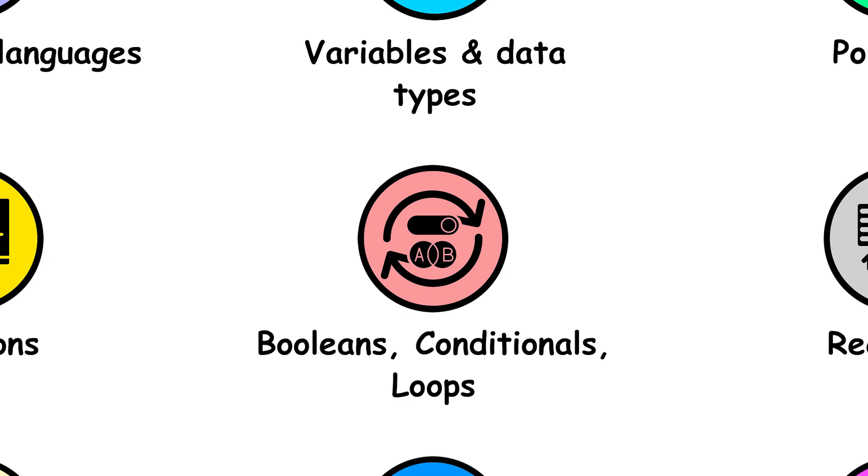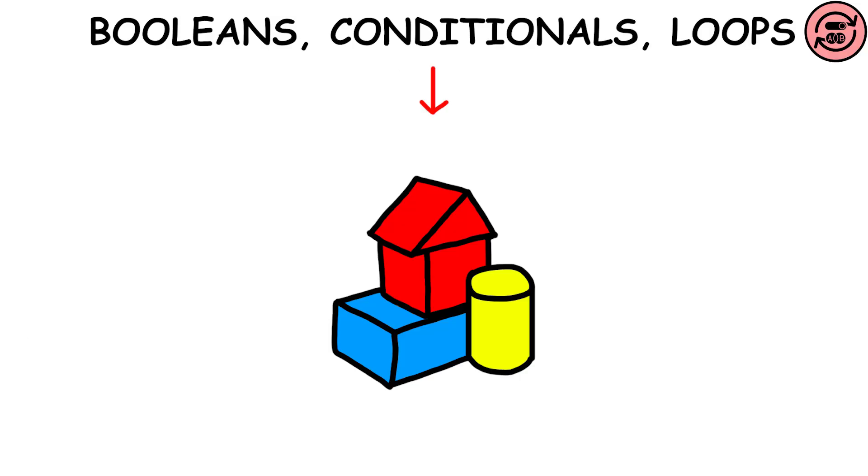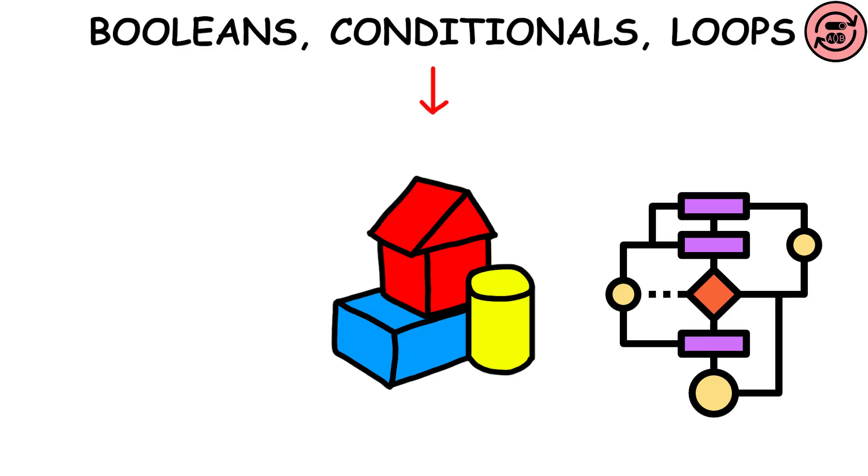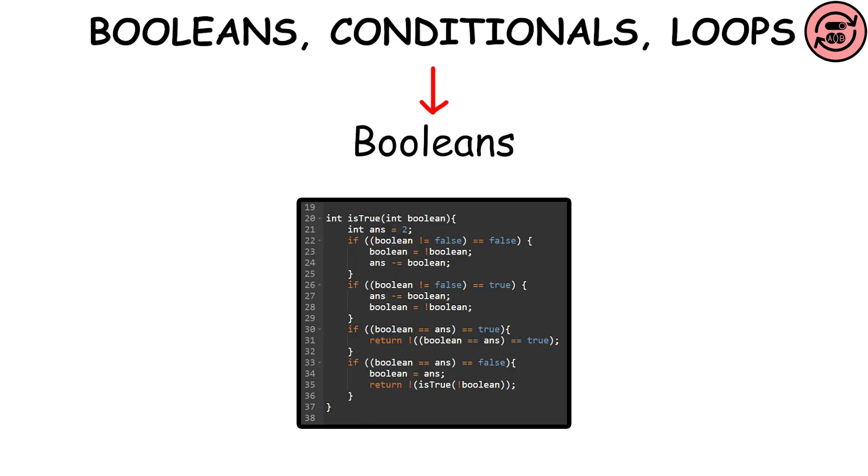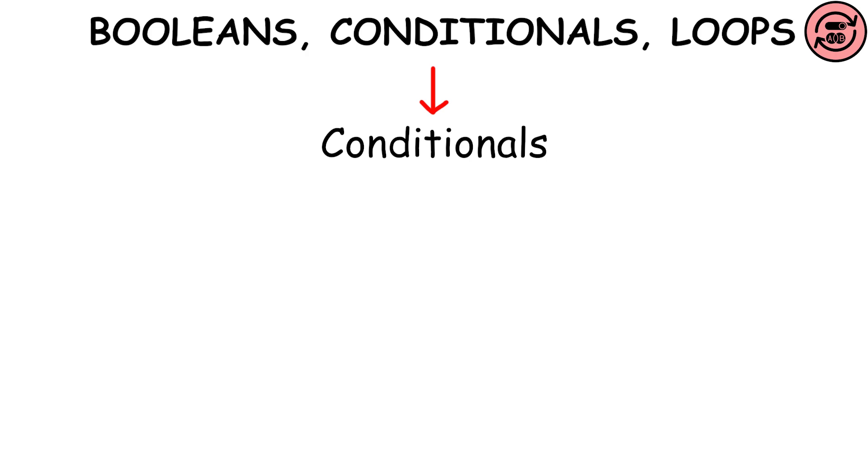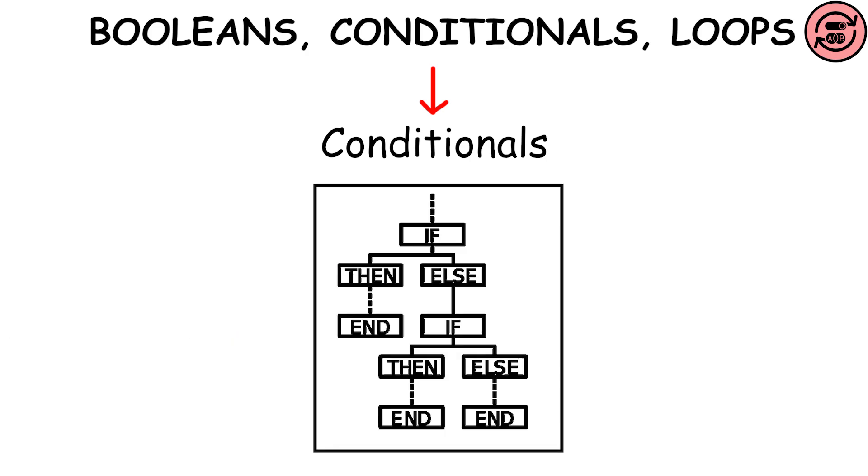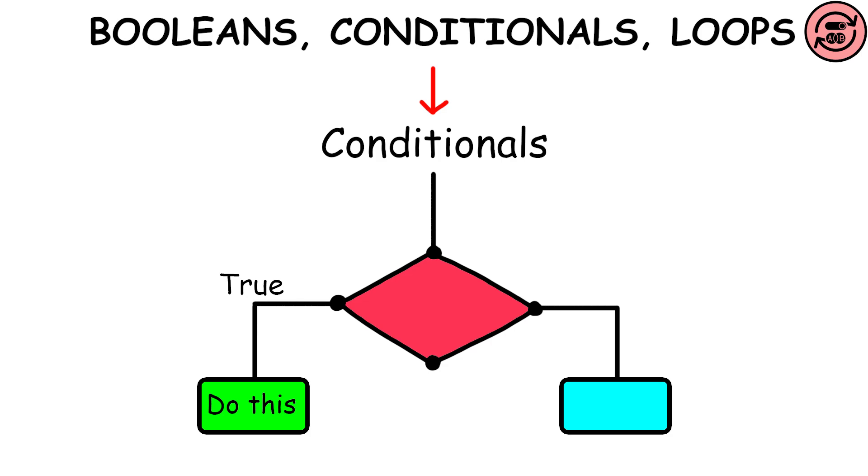Booleans, conditionals, and loops are like the building blocks of programming. They're what make algorithms work. Booleans are like light switches. They can be either on or off. We use them to make decisions in our code. Conditionals are like forks in the road. They let our program choose different paths based on certain conditions. So if something is true, we might do one thing, and if it's false, we might do something else.